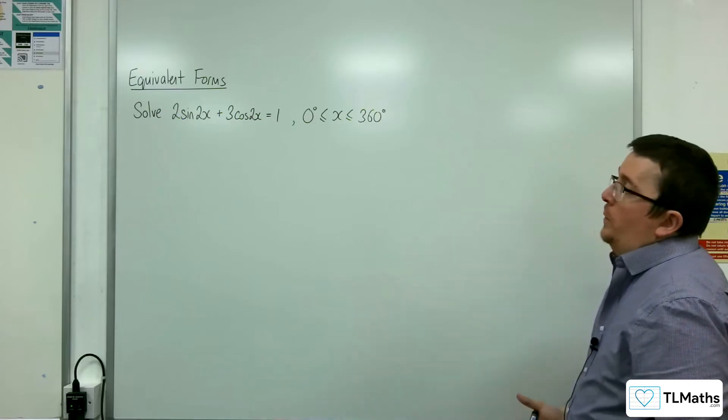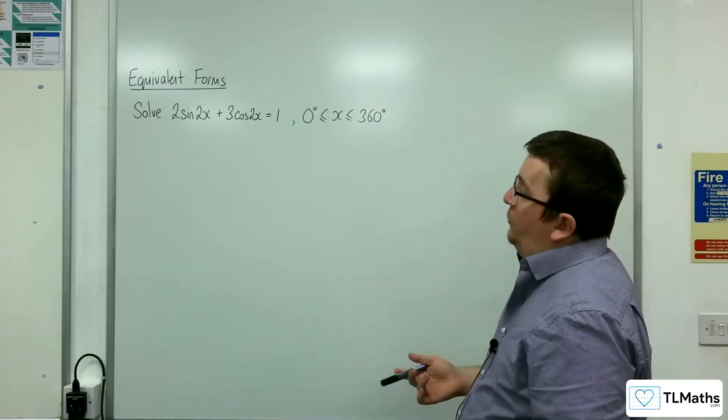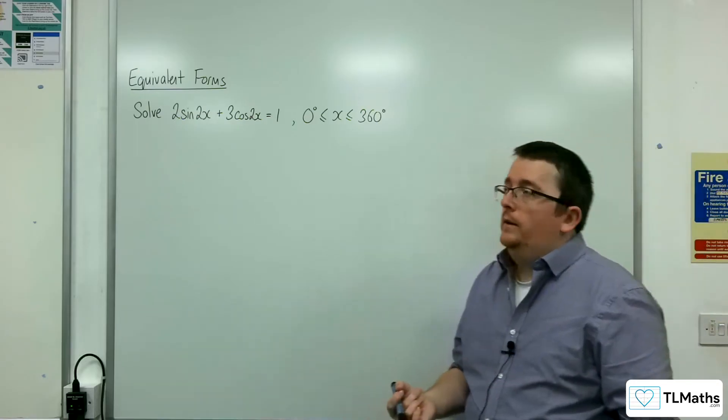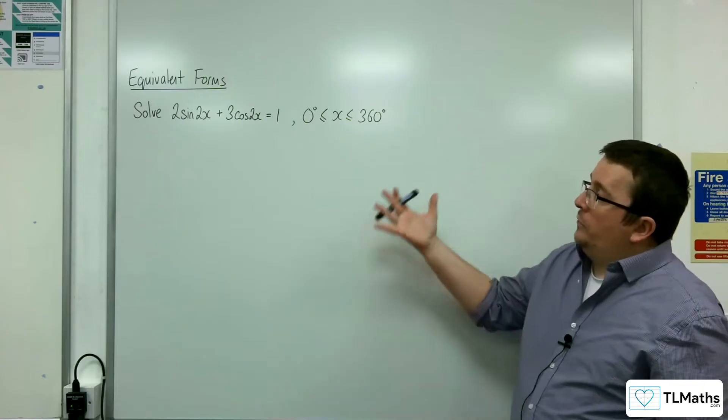In this video, we're going to solve the equation 2sin2x + 3cos2x = 1, where x is in degrees from 0 to 360.